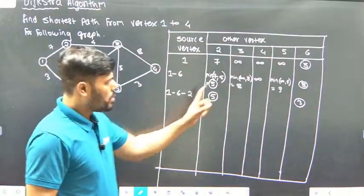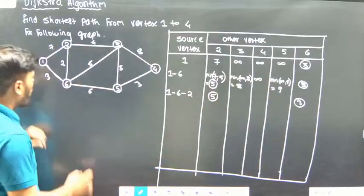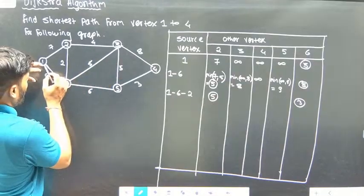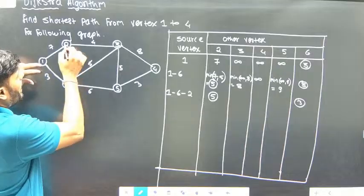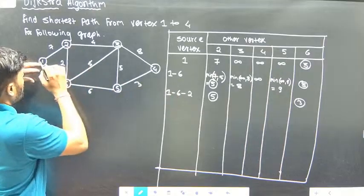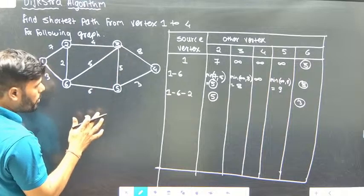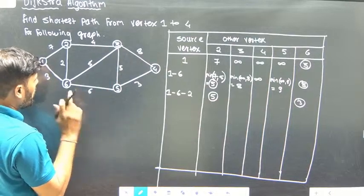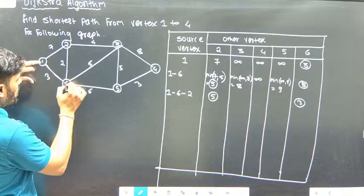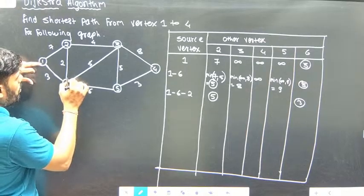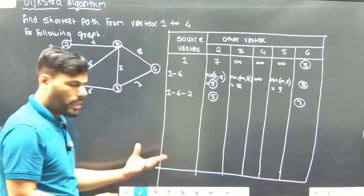Now next, we will check vertex 4 and 5. To go to vertex 4, we have one option via vertex 2: 7 plus 4 equals 11, which is not better. We have one more option via 6 plus 2: 5 plus 4 equals 9, which is again greater. So the previous option is greater as well.